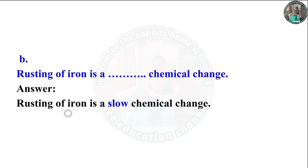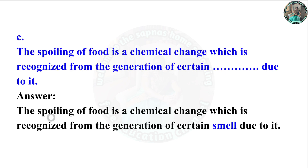Rusting of iron is a slow chemical change because it takes time. The spoiling of food is a chemical change which is recognized from the generation of certain smell due to it.